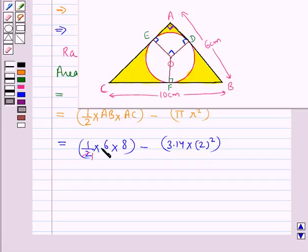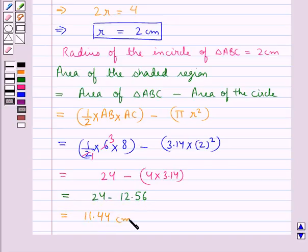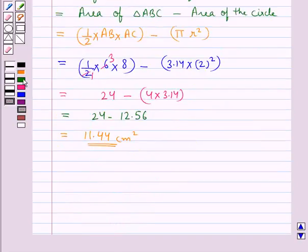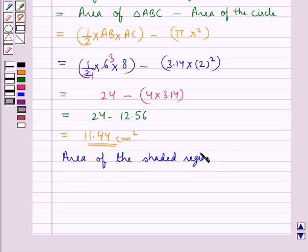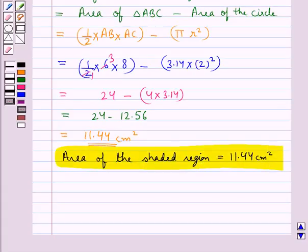Simplifying: half times 6 is 3, and 3 times 8 is 24, minus 4 times 3.14. This equals 24 minus 12.56, which is equal to 11.44 centimeters squared. Thus, the area of the shaded region is equal to 11.44 cm². This is our final answer, and this completes the session. Hope you have understood the solution of this question.